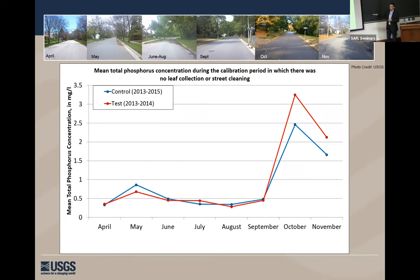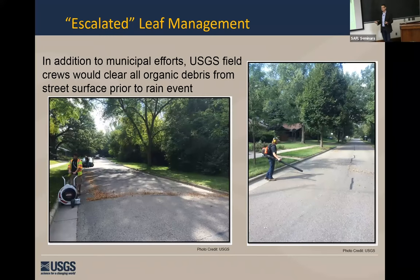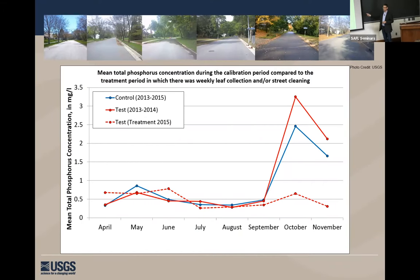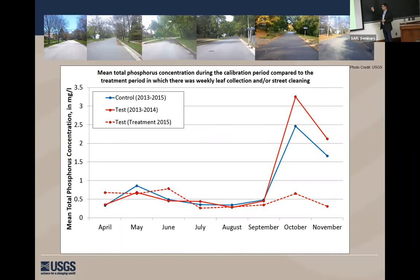Then we wanted to follow that up with a treatment option. In our case, we wanted to do the absolute maximum effort, because if we couldn't detect any change from this maximum effort, there's no point stepping back and testing an actual municipal practice. Our maximum effort was to go out there with leaf blowers and blow all the vegetation off the street as close to a storm as possible — having those streets as clean as possible right before a rain event. The result: that red dashed line is our new mean monthly concentration once all the vegetation is cleared. It's relatively flat-lined, bringing those high fall phosphorus concentrations down to near summertime levels. That gave us confidence that yes, leaves are a significant source of phosphorus, and if you remove them, you'll have dramatic changes at the end of the pipe.